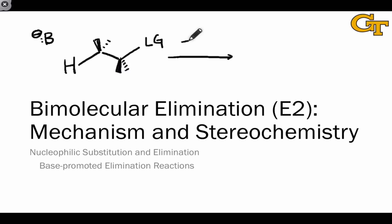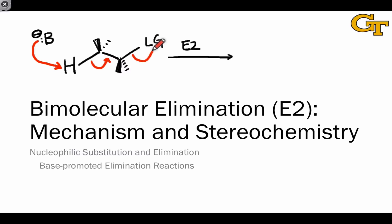The bimolecular elimination mechanism, or E2, involves concerted deprotonation and loss of the leaving group. Analogously to SN2, this reaction proceeds through a single elementary step. The base deprotonates a hydrogen at the beta position with respect to the leaving group, a new pi bond is formed, and the leaving group departs. This elementary step involves two orbital interactions, one of which enforces a very specific orientation between the bond between the beta hydrogen and carbon and the bond between the adjacent carbon and the leaving group.